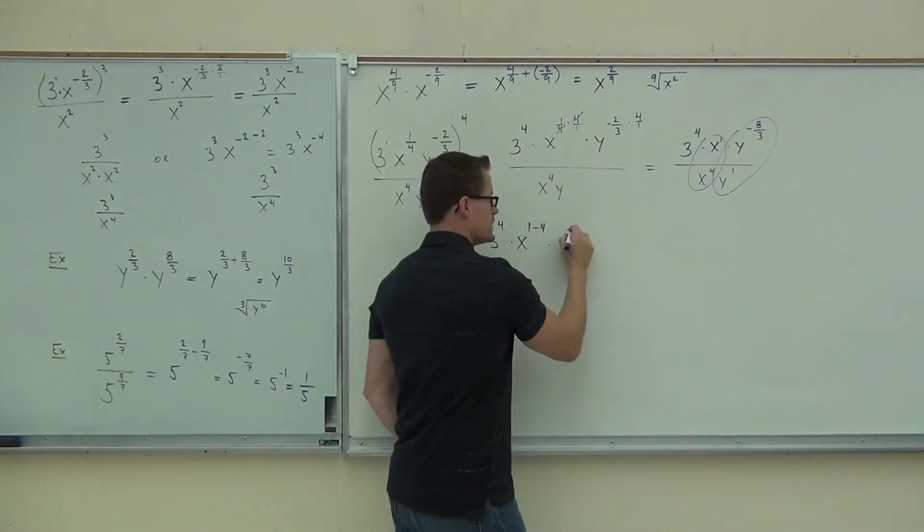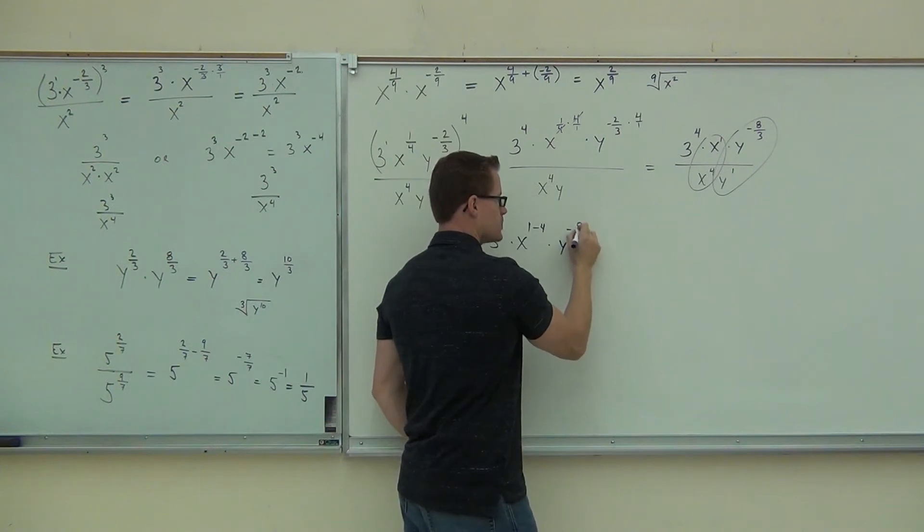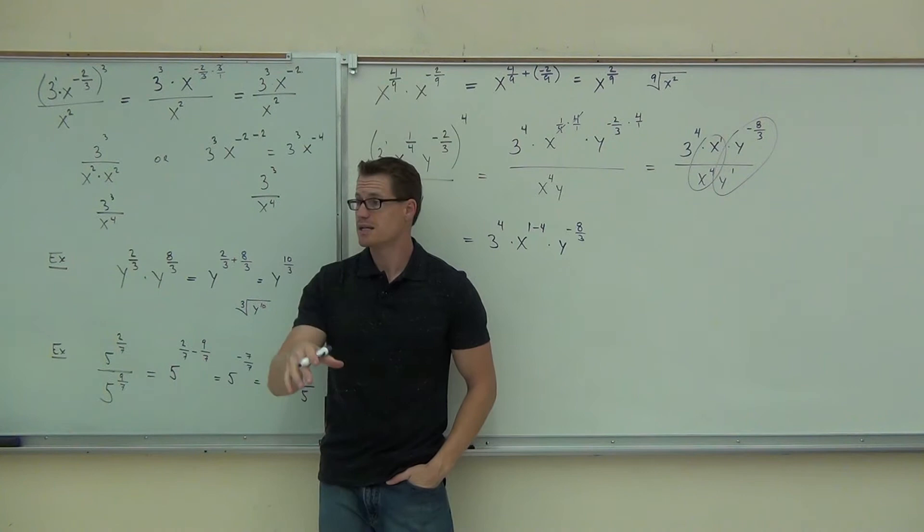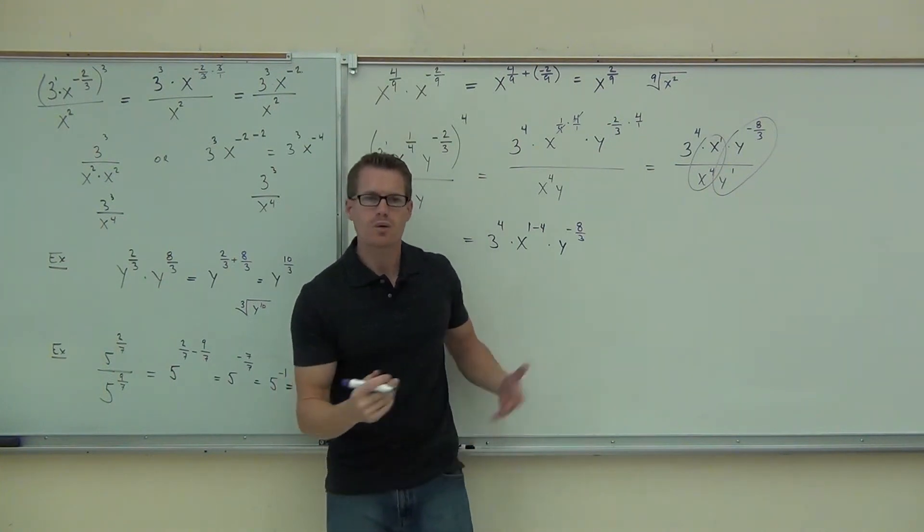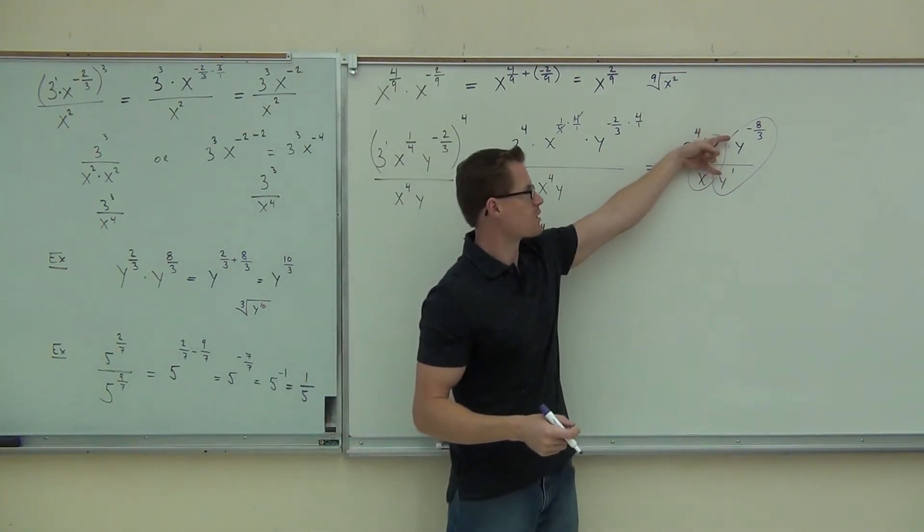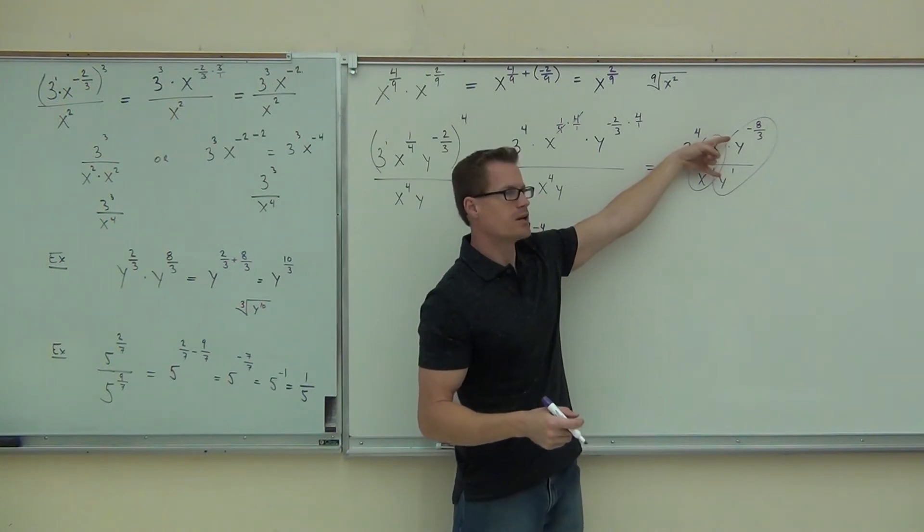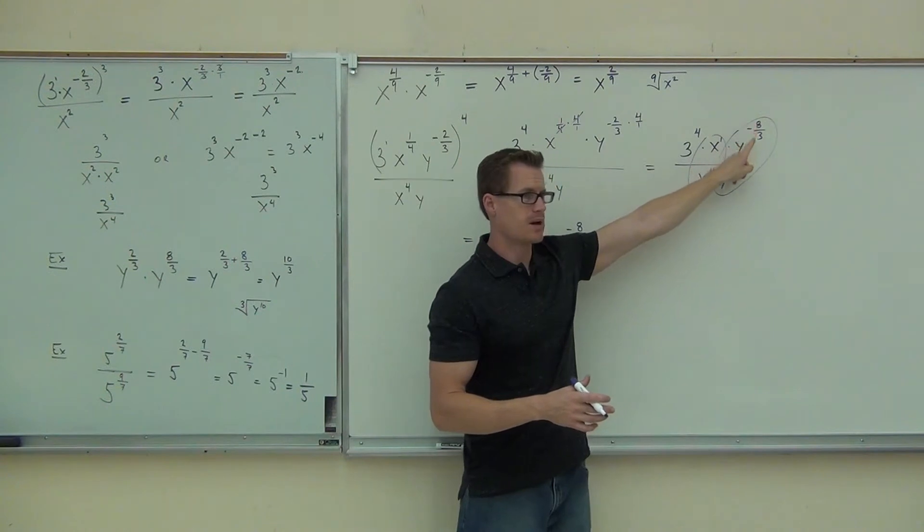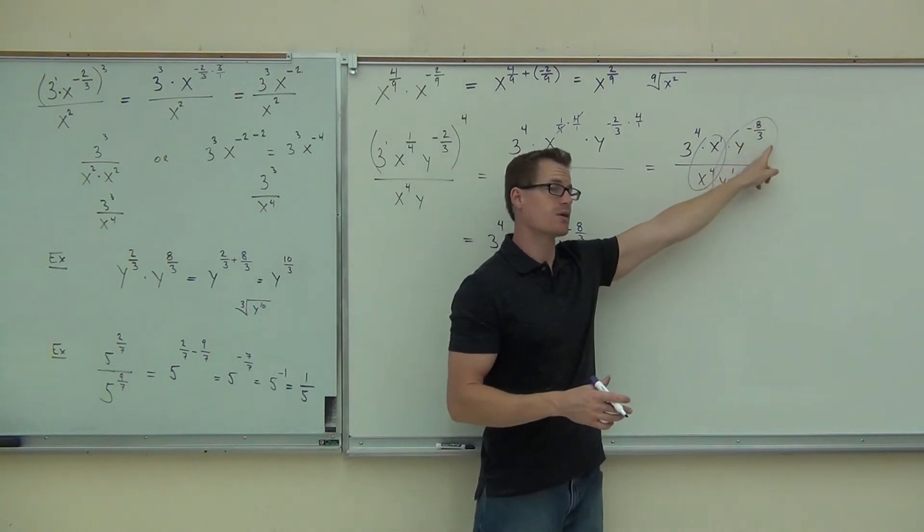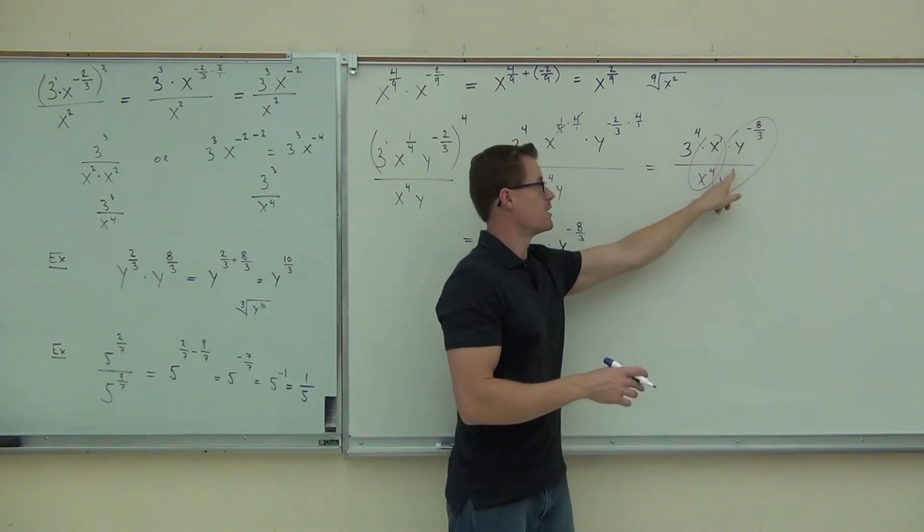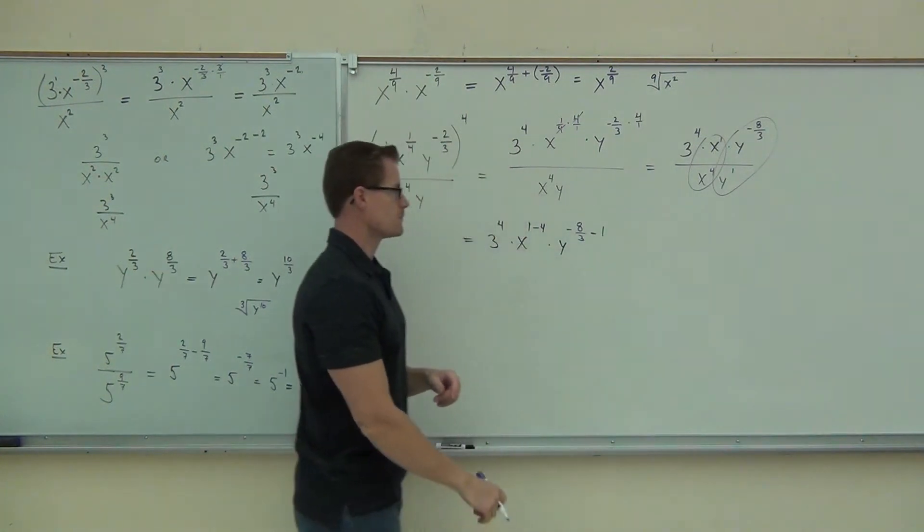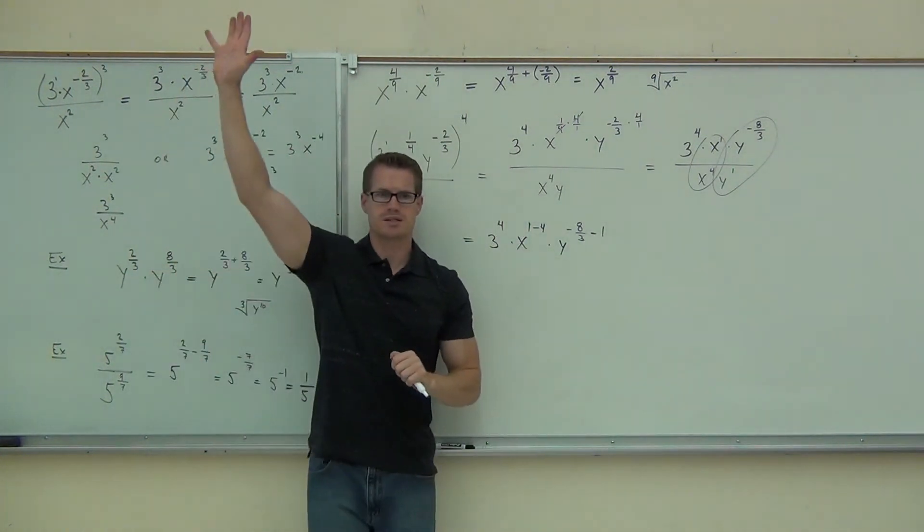We have negative 8 thirds over y to, what power is that one? 1. Is it just going to be negative 8 thirds? Does that one do anything? We're subtracting it. Yeah, so it's y to the first power. So when you're doing this, you go, okay, I know that my common bases are, one's on the numerator, one's on the denominator. I know to combine those, I subtract exponents. Top exponent minus the bottom exponent. So it's not just negative 8 thirds. It's negative 8 thirds minus 1.